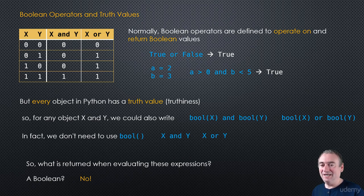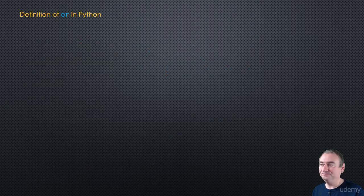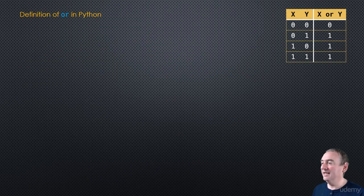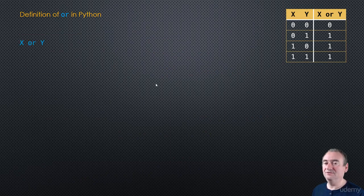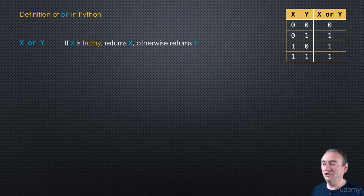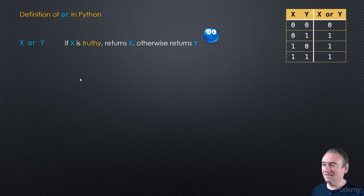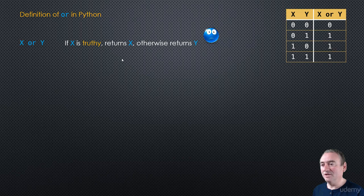Let's see what's going on and how Python actually defines its AND and OR operators. Let's start with OR and bring back the truth table for OR. x or y is defined this way: if x is truthy, it will return x; otherwise it returns y.